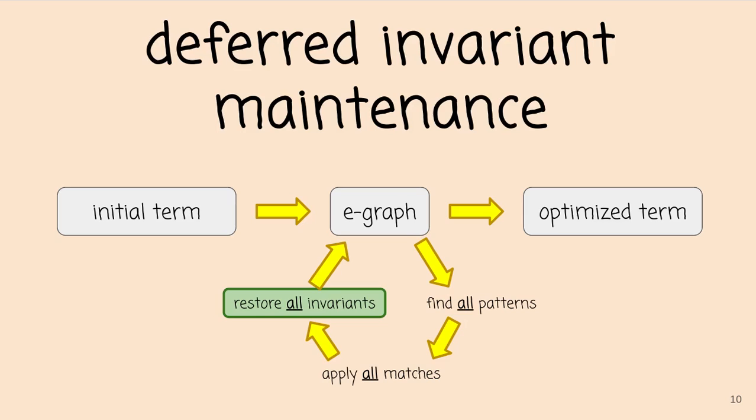And then you can apply all of the matches in a write phase where you allow the data structure invariants to be broken. And then you can restore all of those invariants at once in an amortized way, saving a lot of work.